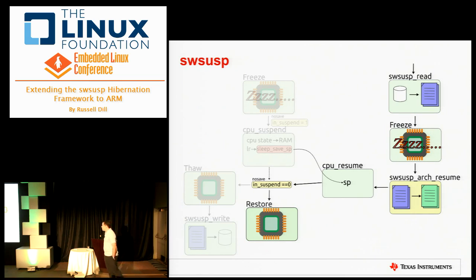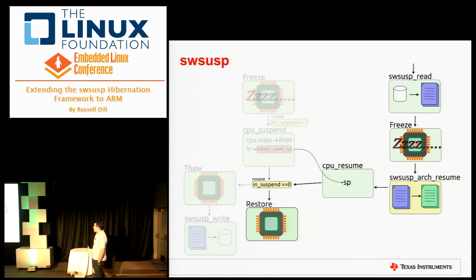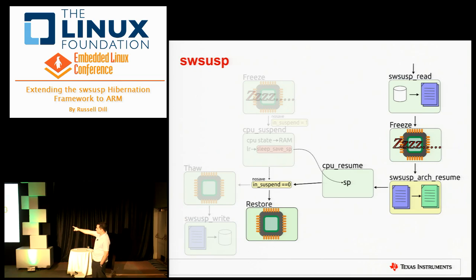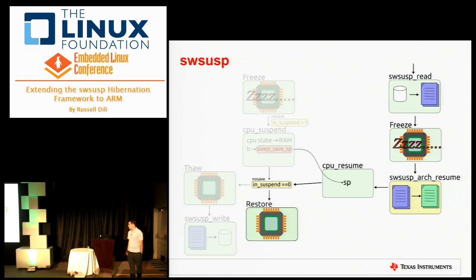The restore kernel reads the pages to memory, quiesces all the devices, calls your resume code which takes the loaded pages and returns them to their original location in memory, then calls into the CPU resume function just like happened when we snapshotted the system. It reloads the stack pointer and returns from that same point, but now the in-suspend variable is zero. So we call the restore functions for devices and return to running state.